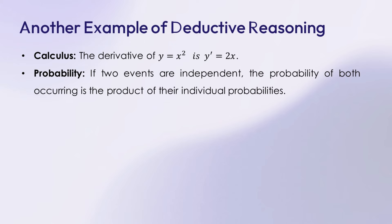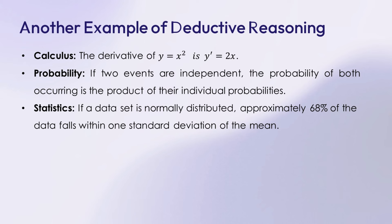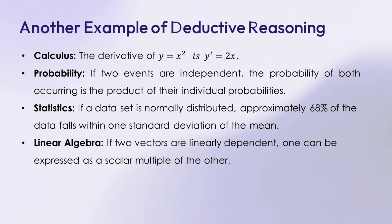Number 6: probability — if two events are independent, the probability of both occurring is the product of their individual probabilities. Number 7: statistics — if a data set is normally distributed, approximately 68% of the data falls within one standard deviation of the mean. Number 8: linear algebra — if two vectors are linearly dependent, one can be expressed as a scalar multiple of the other.